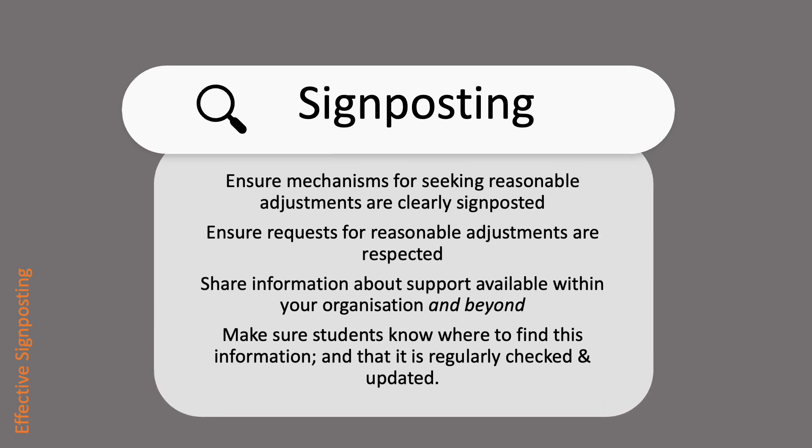Finally, it's important to make sure that you signpost additional forms of support and information. This should include ensuring that mechanisms for seeking reasonable adjustments, for those for whom that is required, are clearly signposted. Requests for reasonable adjustments must be respected. You should also share information about support that is available within your organisation and beyond. If you are based at Strathclyde, the Helping Students in Distress Guide is a useful starting point here. Make sure students know where to find this information and that it is regularly checked and updated.